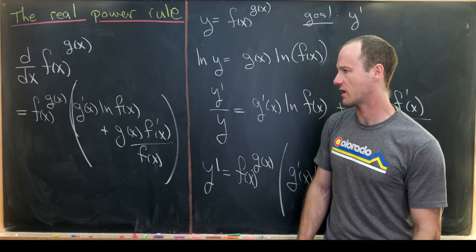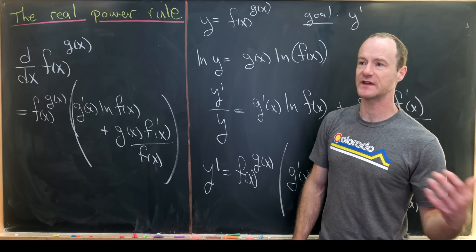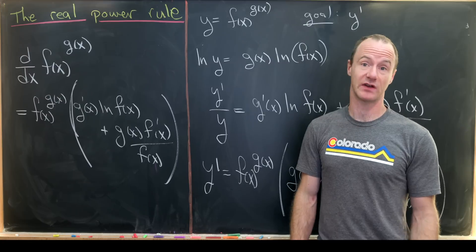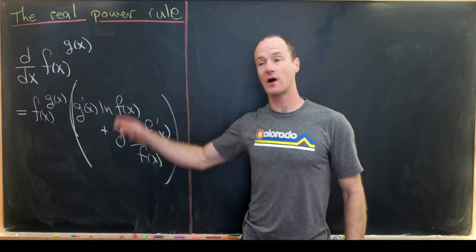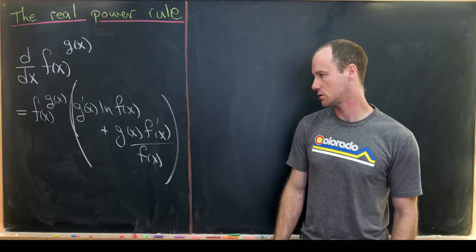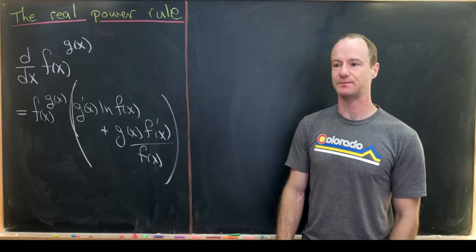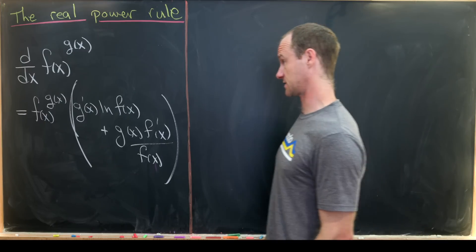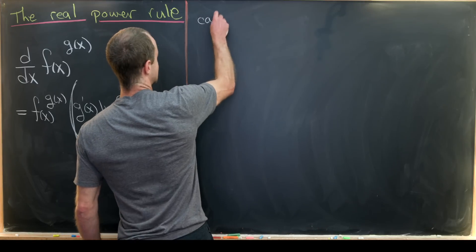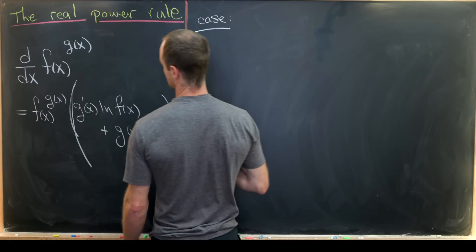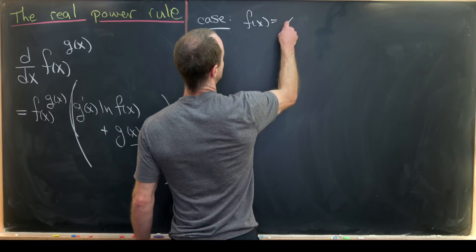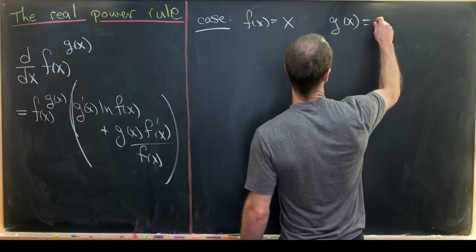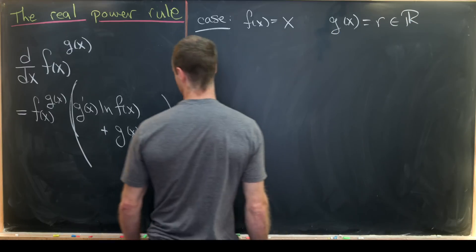Now that we've derived that nice closed form for the real power rule, let's look at how it specializes to things we would see at the beginning of a calculus class. The first case to look at is when f(x) equals x and g(x) equals r, where r is a real number.